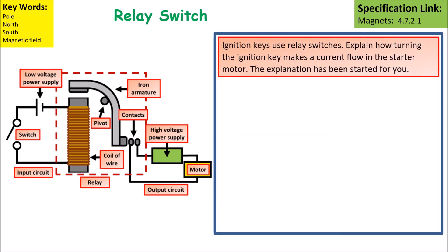Let's have a look at this example. Ignition keys use relay switches. Explain how turning the ignition key in a car makes current flow in the starter motor.